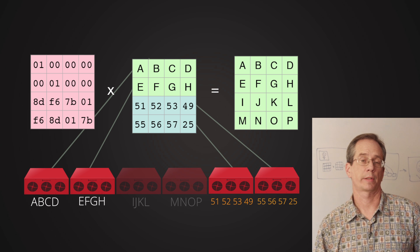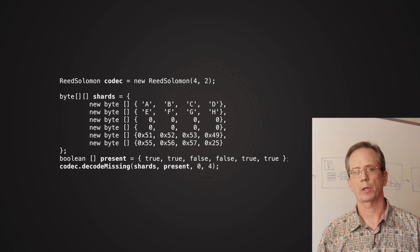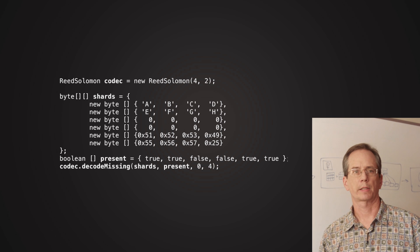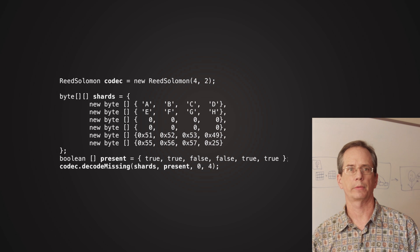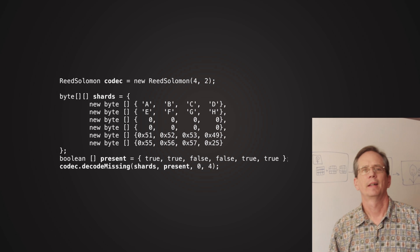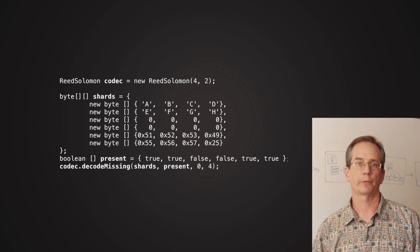And here again, we have a code example using our open source library, where you create a Reed-Solomon codec, take some byte arrays with the data, the middle two rows are missing because those are the two you couldn't read because those disks were powered down. Then you call the decode missing function, and it fills in the missing pieces so you've got your original file.